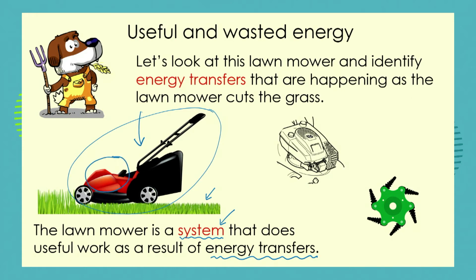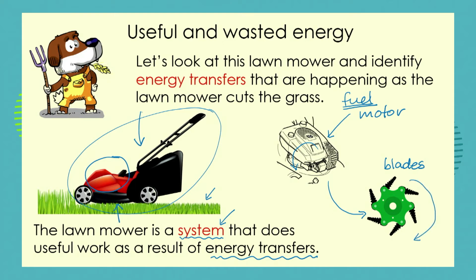Here in this part of the lawnmower, we have the lawnmower motor or engine. Very basically, what happens is that we're going to put in a fuel source, and this is going to allow the motor to work. The motor is going to transfer its energy to the blades, which are situated underneath the lawnmower. And the blades are going to spin around really, really fast, and in this way the blades will cut the grass. But of course, the whole system can't work unless we've got you pushing the lawnmower.